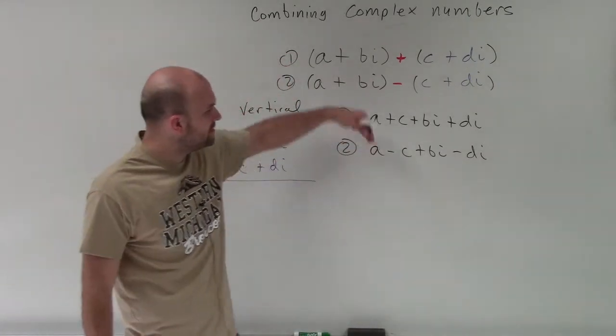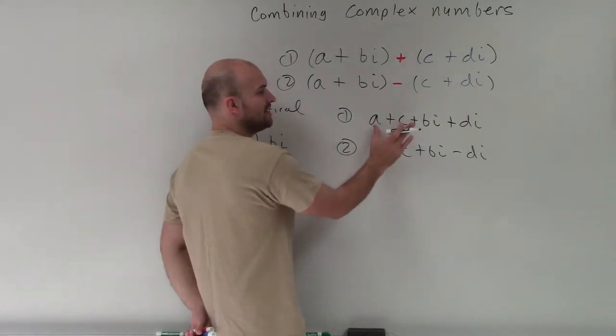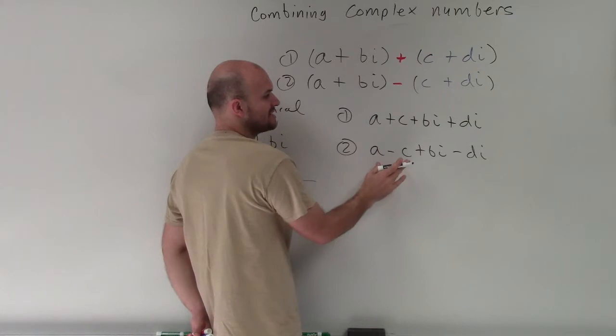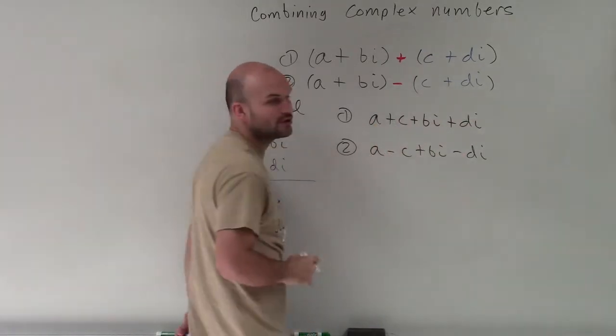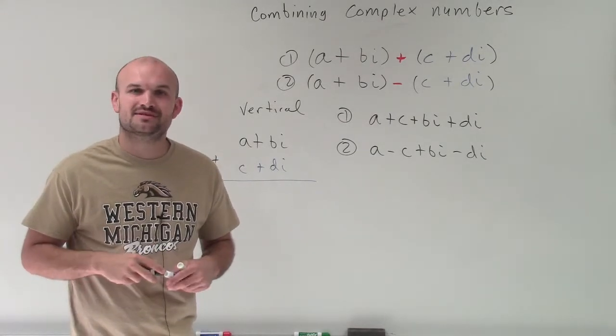So the main important thing is you can also rearrange them horizontally by making sure you're combining, by either adding or subtracting or distributing the negative sign, your reals and your imaginary. So there you go, that's just a quick overview on how to combine complex numbers. Thanks.